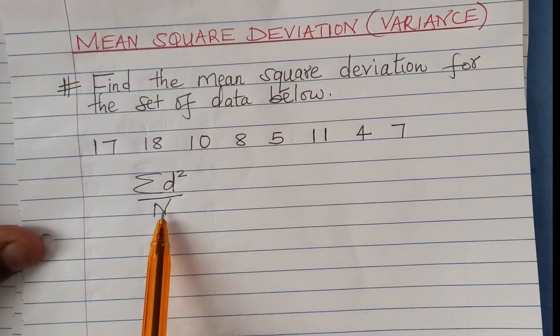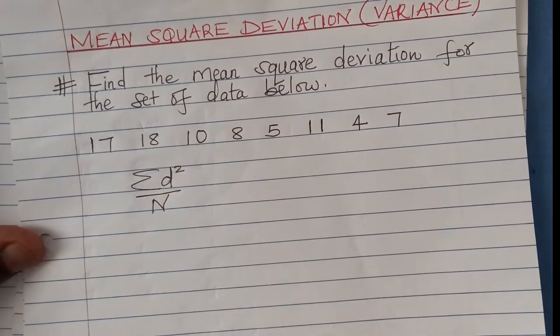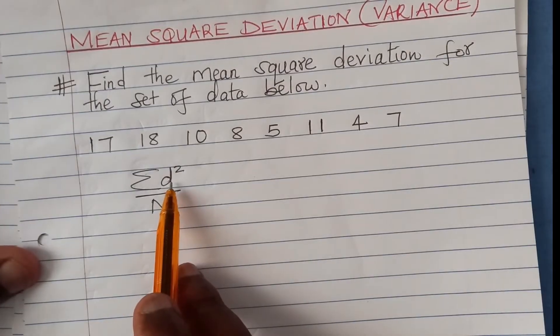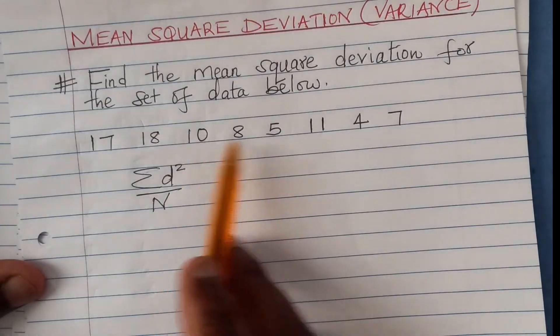In this case, n is 1, 2, 3, 4, 5, 6, 7, 8. The eight values, so n is 8. So we need to get d. d is the deviation from the mean. So we need to get the mean of this set of data first.